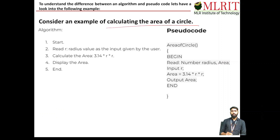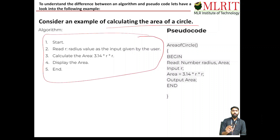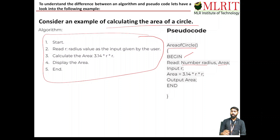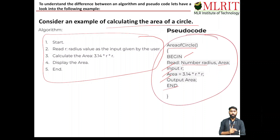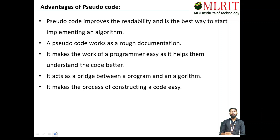For better understanding, here we take the example of calculating the area of a circle, which we discussed in our previous class. The same algorithm is now converted as pseudo code. The function name is AreaOfCircle. Begin: read number radius; define the area. Input is r, and compute area equals pi * r². Output is area. End. You observe that the algorithm may be understood by a layman, but pseudo code is understood by technical people with knowledge of programming languages.